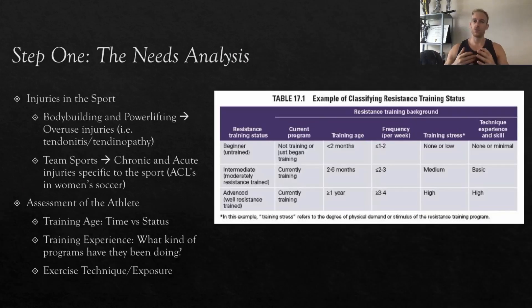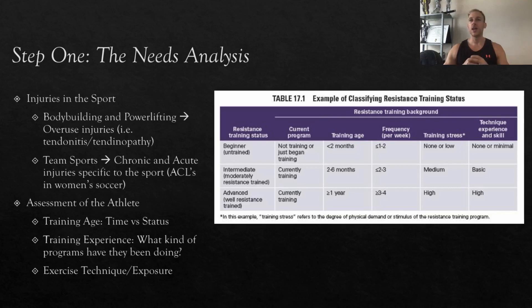One of the biggest predictors of someone not going far in a sport is getting injured frequently. The more time you spend injured, the more time away from training. Part of being a great bodybuilder is staying healthy so you can string together enough productive training to achieve your goals. If you're constantly dealing with back, knee, or elbow issues, you're losing valuable weeks, months, and years. So establish what are the most common injuries in the sport. For bodybuilding, it's pretty easy — they're overuse injuries: tendonitis, tendinopathy of the elbow and knees.